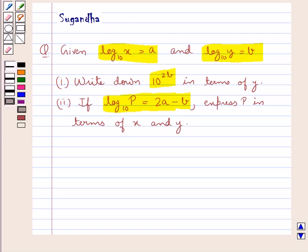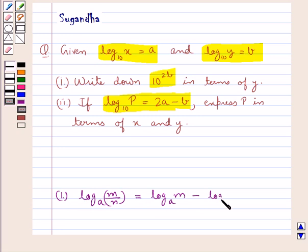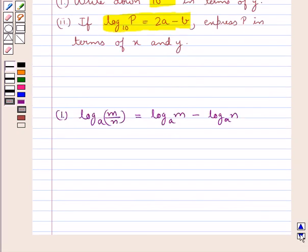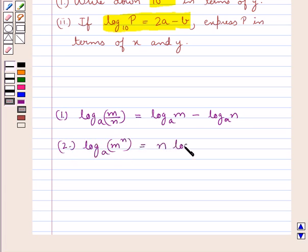Let us first discuss some laws of logarithms to be used in this question. First we have log of m upon n to the base a equal to log m to the base a minus log n to the base a. Then log of m to the power n to the base a is equal to n into log m to the base a.